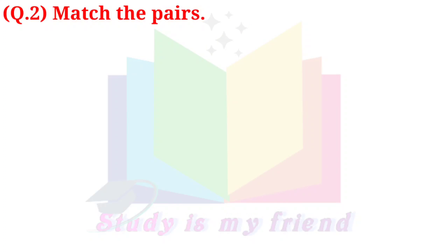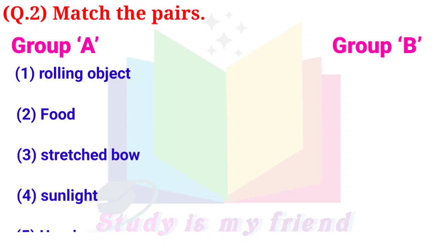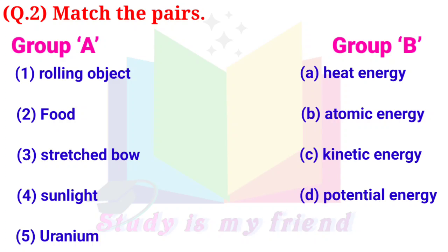Question 2: Match the pairs. Group A: 1. Rolling object, 2. Food, 3. Stretched bow, 4. Sunlight, 5. Uranium. Group B: A. Heat energy, B. Atomic energy, C. Kinetic energy, D. Potential energy, E. Chemical energy.